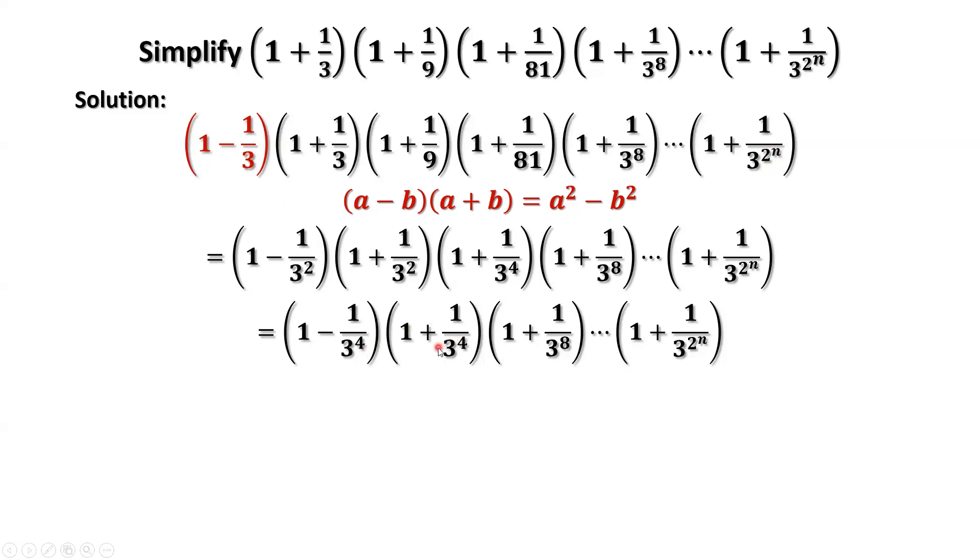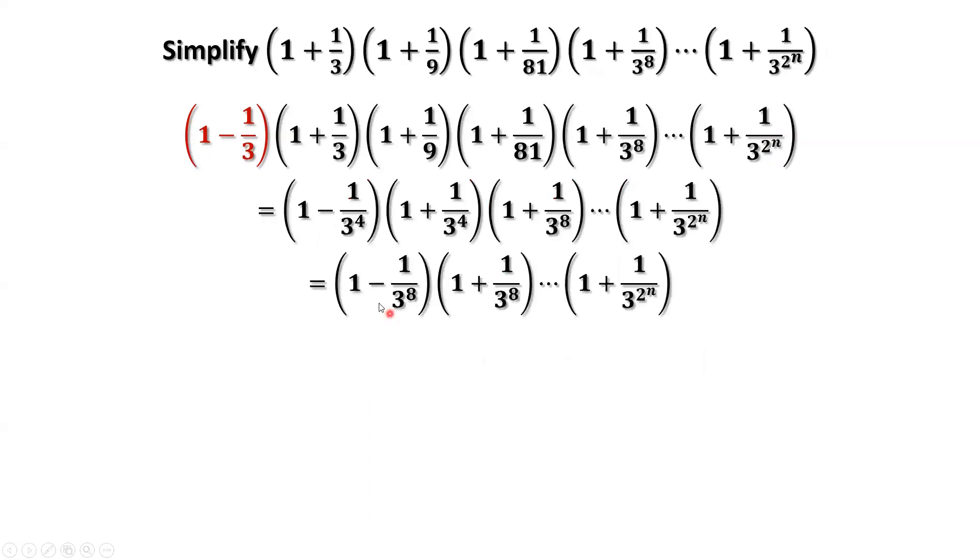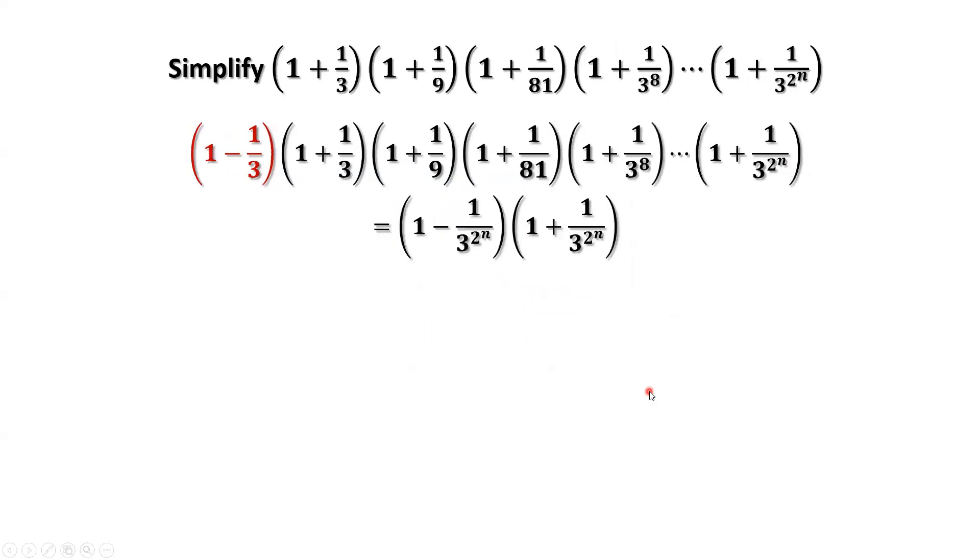We can repeat the same idea to this product. Then we have 1 minus 1 over 3 to the power of 8. We can repeat again, apply that formula to this product. Continue to repeat the same idea. Then we reach the final two items. We use that formula again. The answer is 1 minus 1 over 3 to the power of 2 to the power of n, then squared.